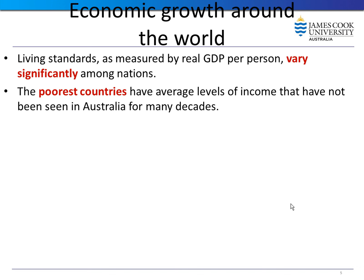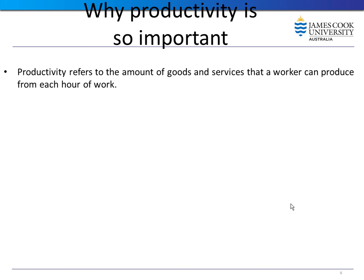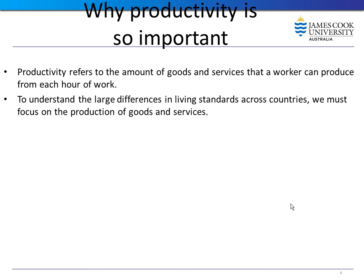We see that living standards, as measured by real GDP per person, vary significantly among nations. The poorest countries have average income levels not seen in Australia for many decades, and annual growth rates that seem small become large when compounded over many years. Since there is a large difference in living standards across countries, we must look at production of goods and services, and productivity is one key explanation.